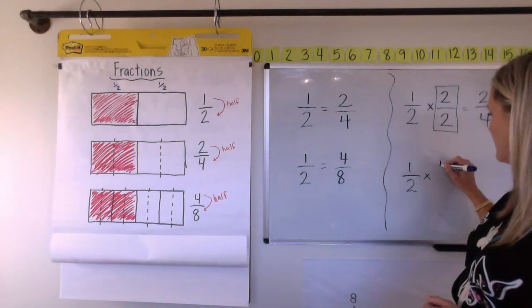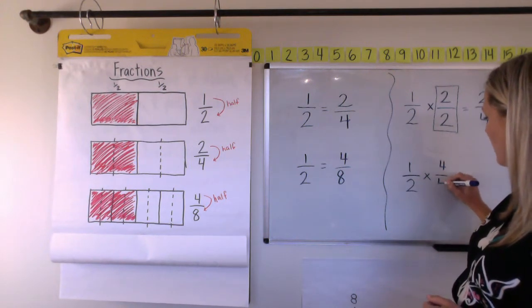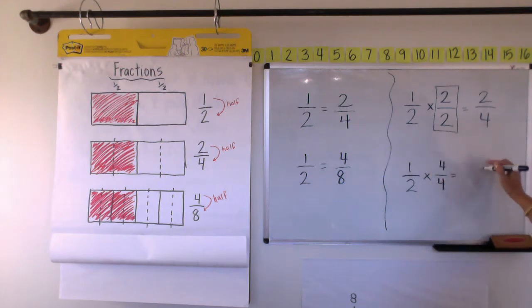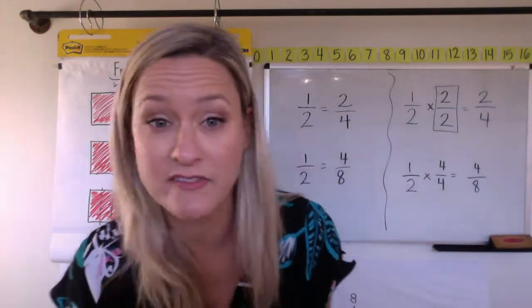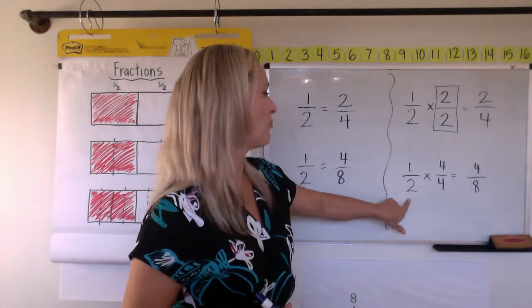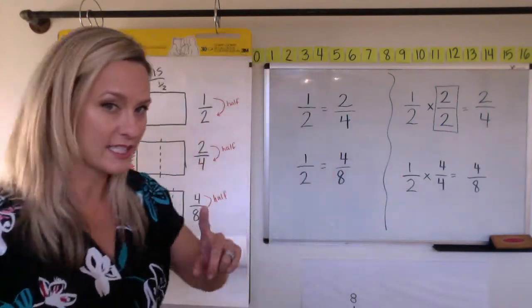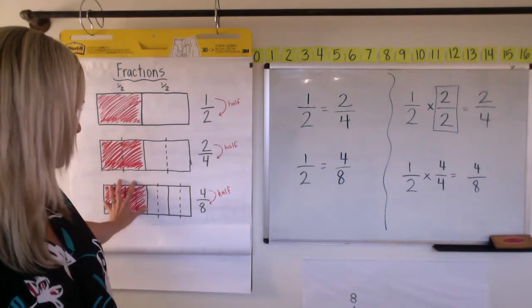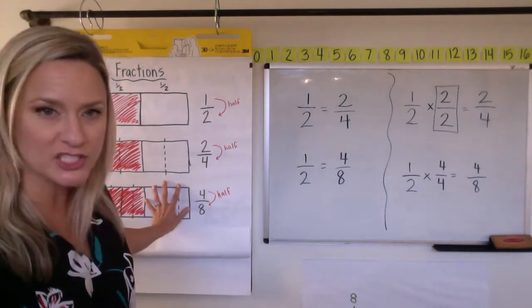So one half times four fourths equals one times four is four. Two times four is eight. And you can actually prove that one half is equal to four eighths using that picture, right? So you can still see that half of it's shaded and the other half is unshaded.